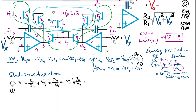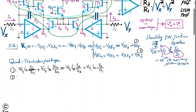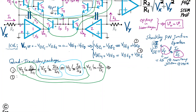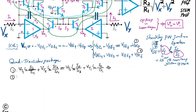By grouping the blue (Vt2) terms together, Is2 cancels out in their ratio. Similarly, grouping the green (Vt1) terms together cancels Is1. This cancellation of IS is critical.